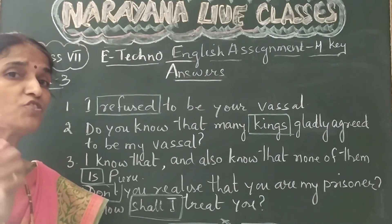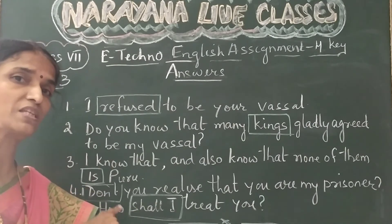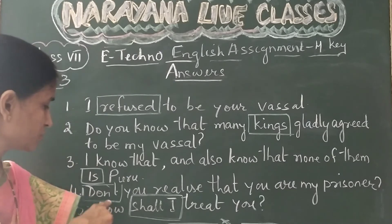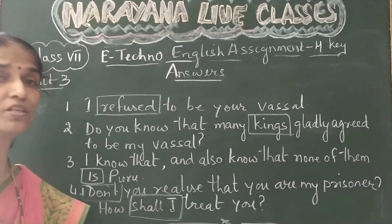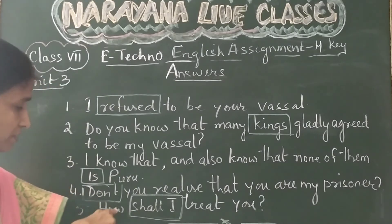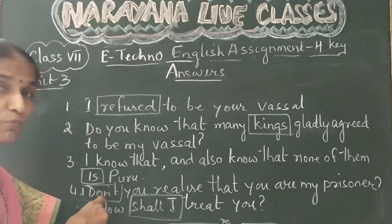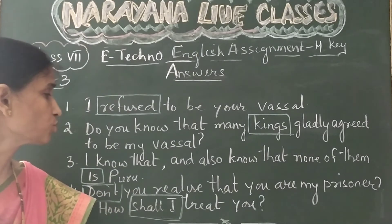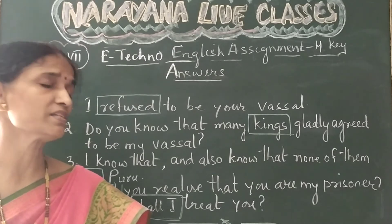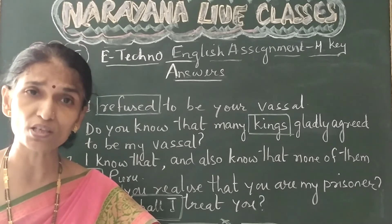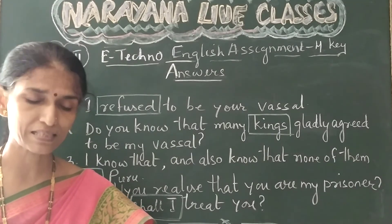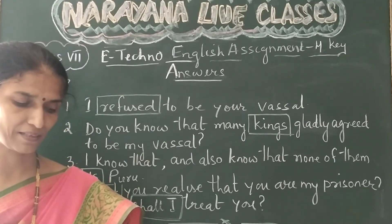He, she, it — we use 'doesn't.' So here the correction is with the verb: 'don't.' The corrected sentence is: 'Don't you realize that you are my prisoner?'